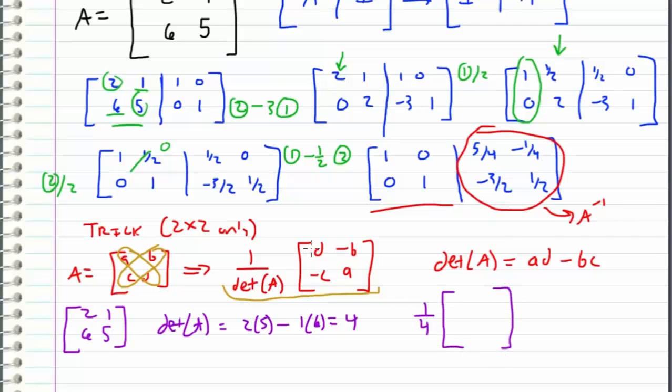So 1 over the determinant of A is 1 fourth and then all we got to do is switch the positions of this 2 and 5 so we get a 5 and 2 right here and then we negate the 6 and 1 which gives us a negative 1 and negative 6 right here.